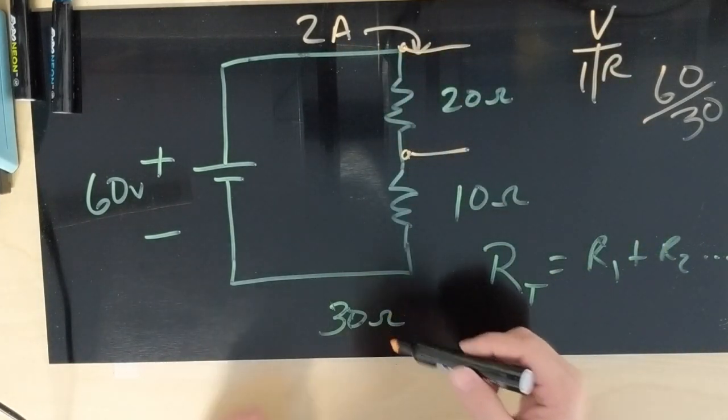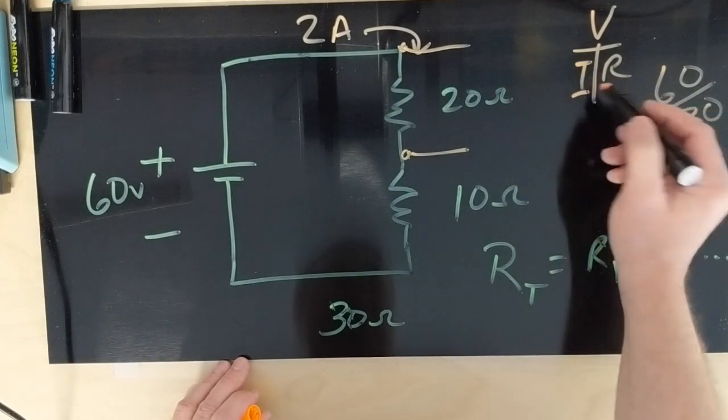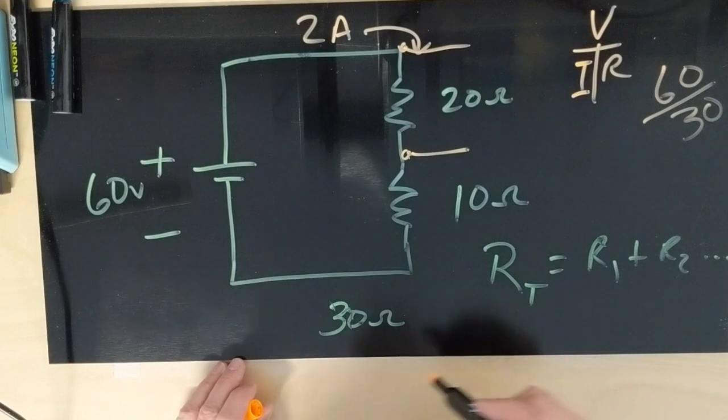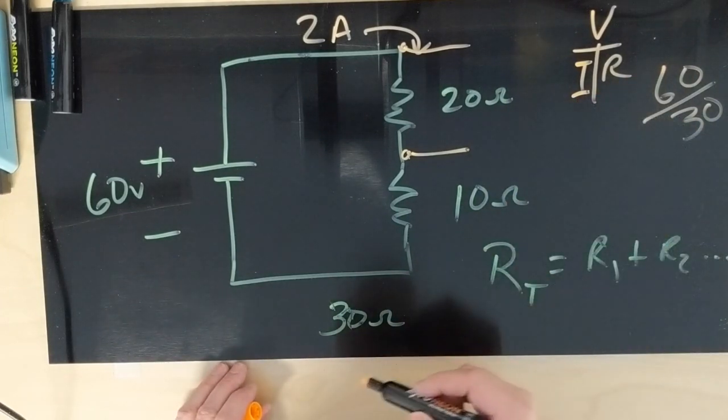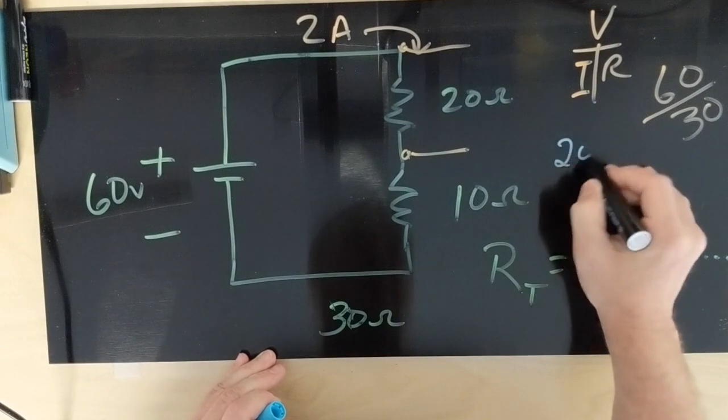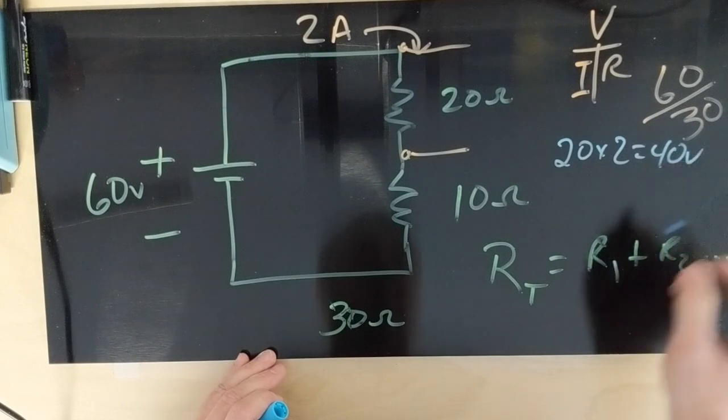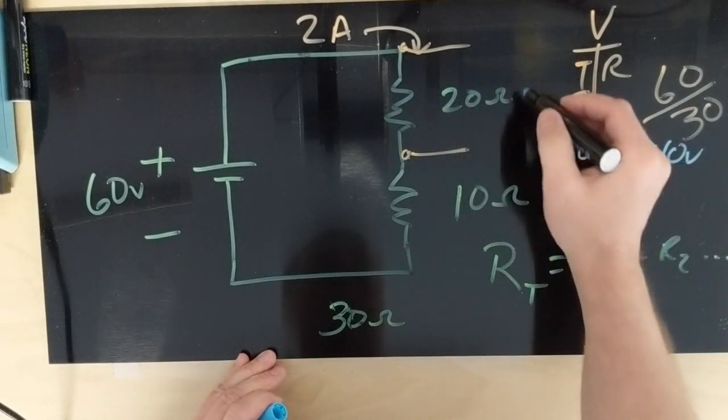If we know our amps and our resistance, our current and our resistance—we know I, we know R—at this point it's going to be 20 times 2. So this is going to be 40 volts across, 40 volts of voltage drop here.